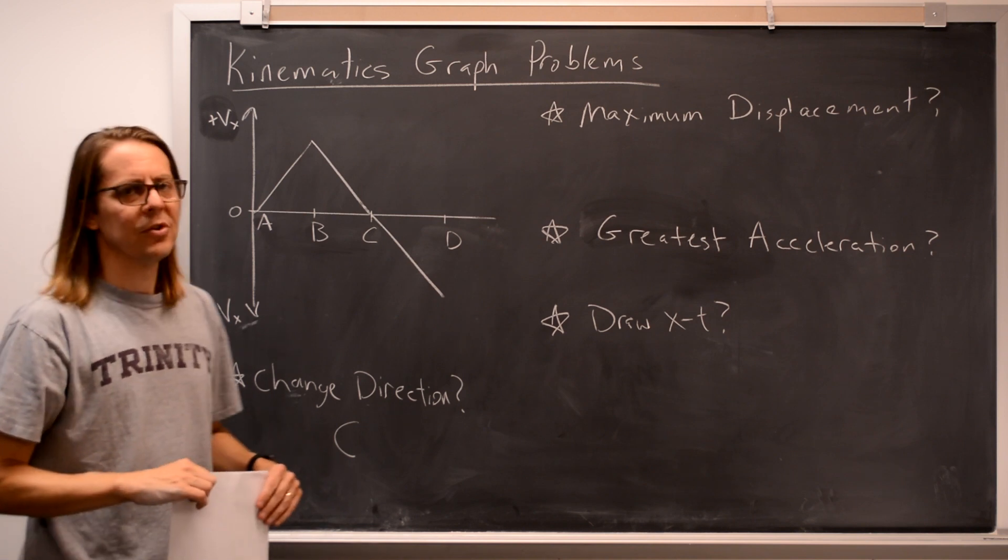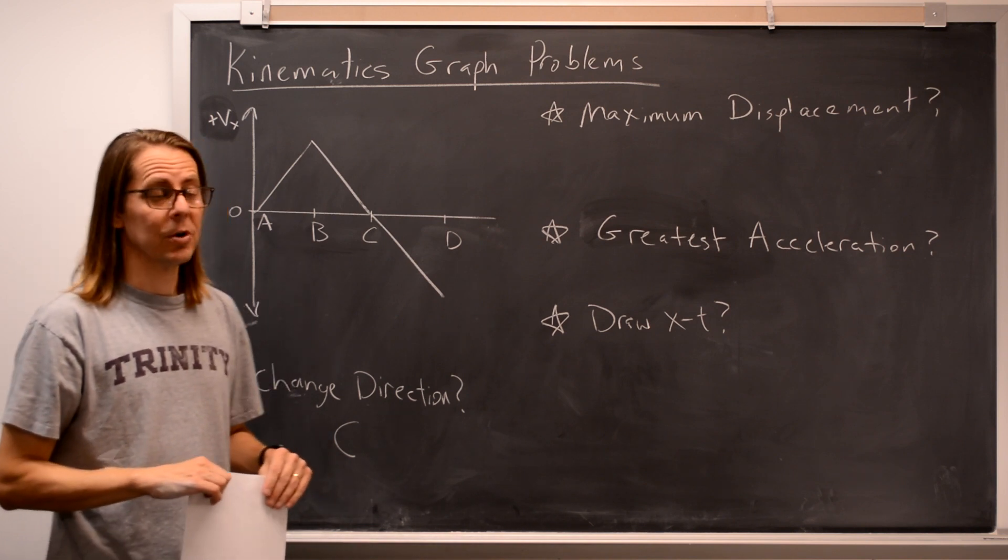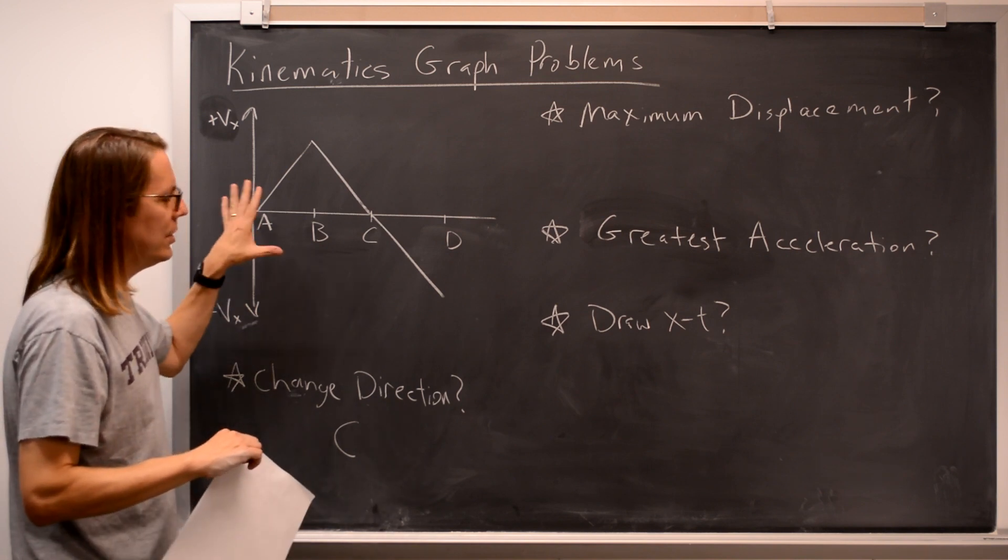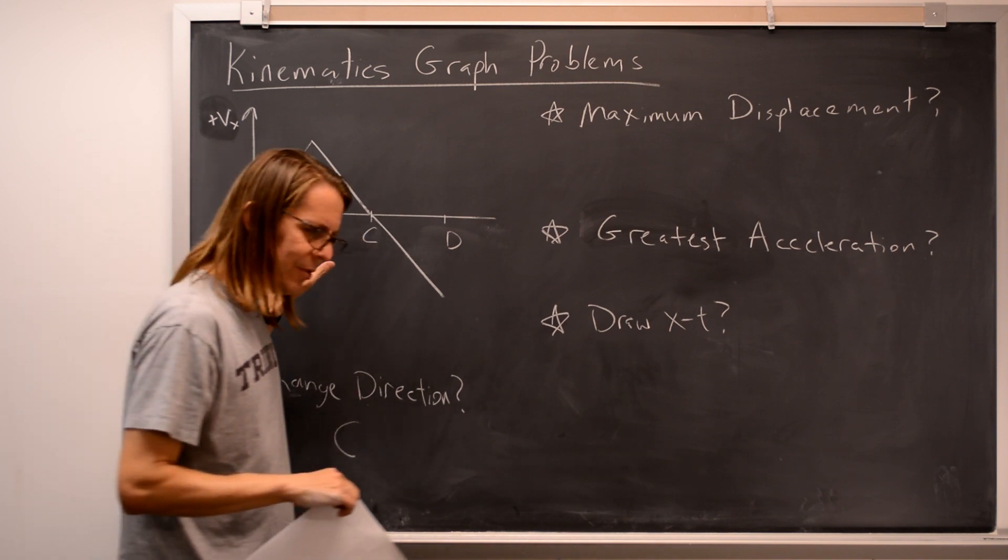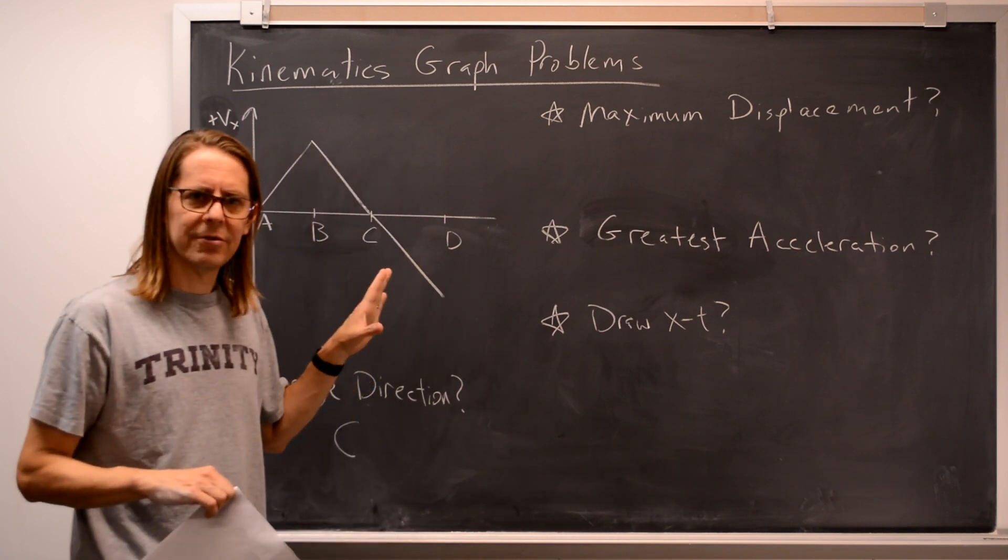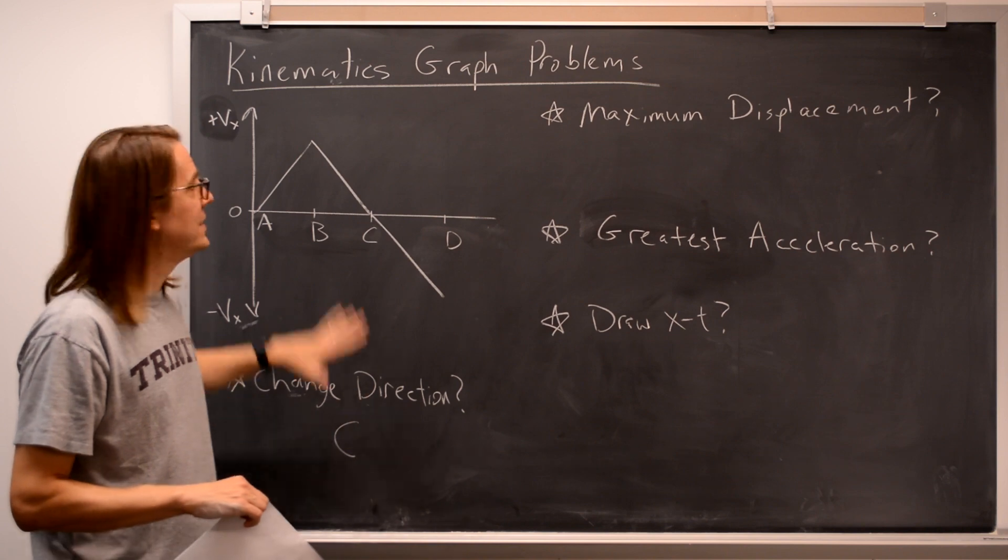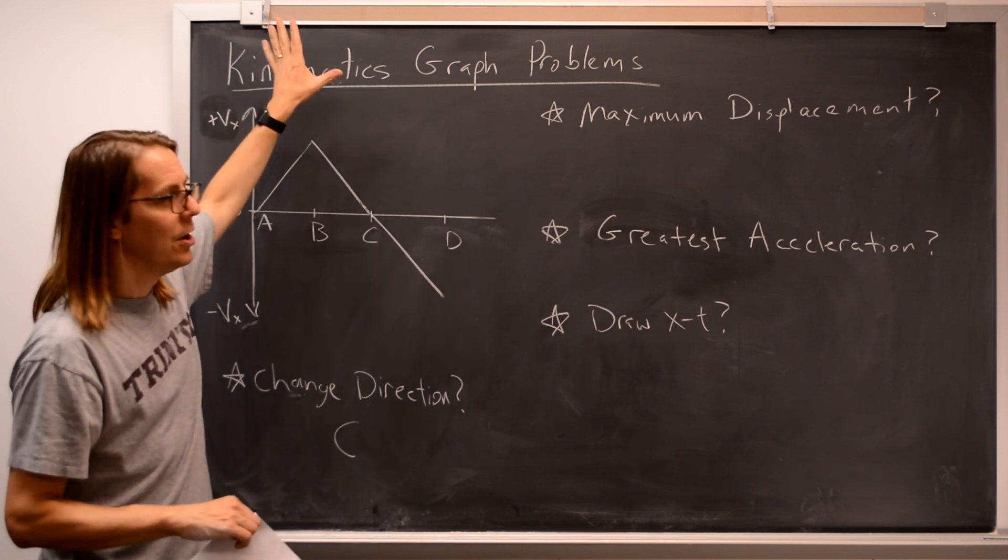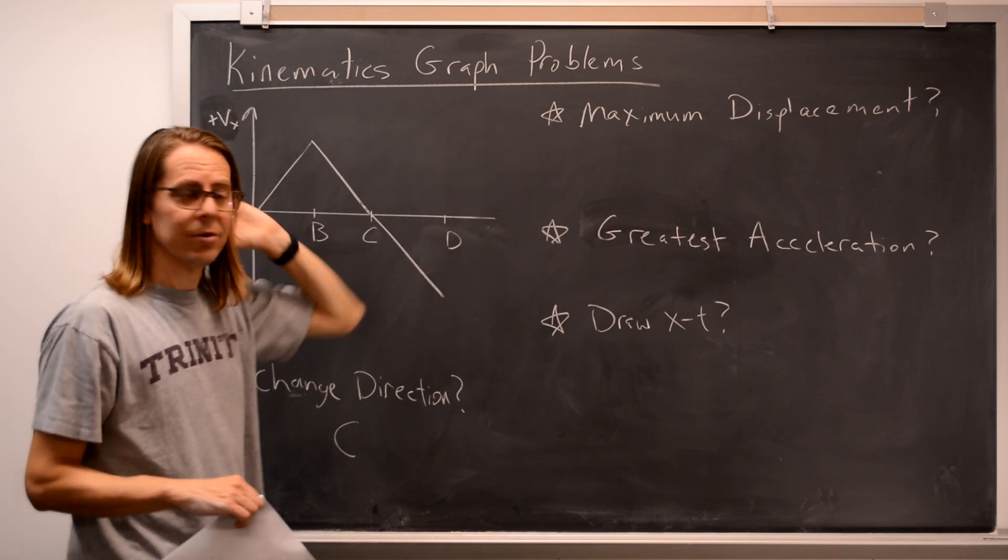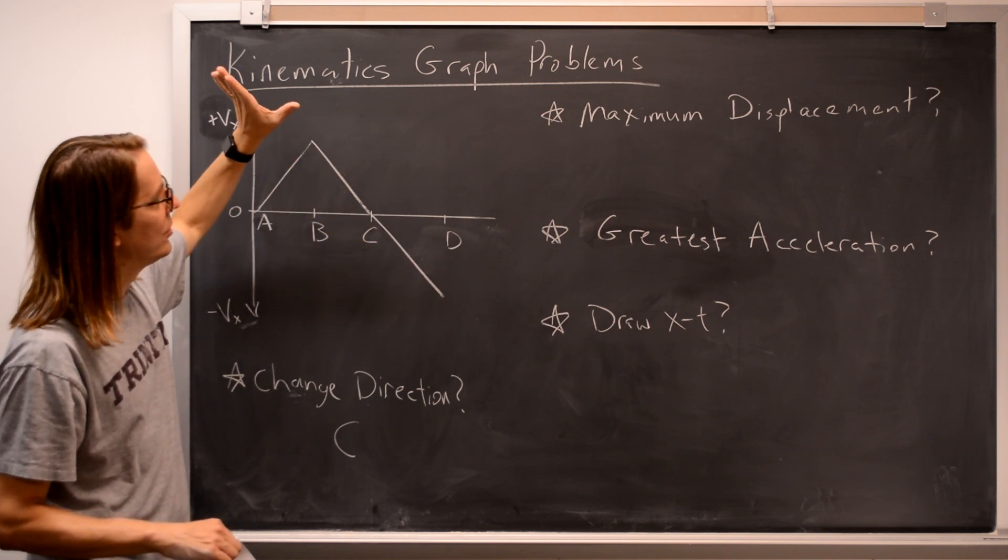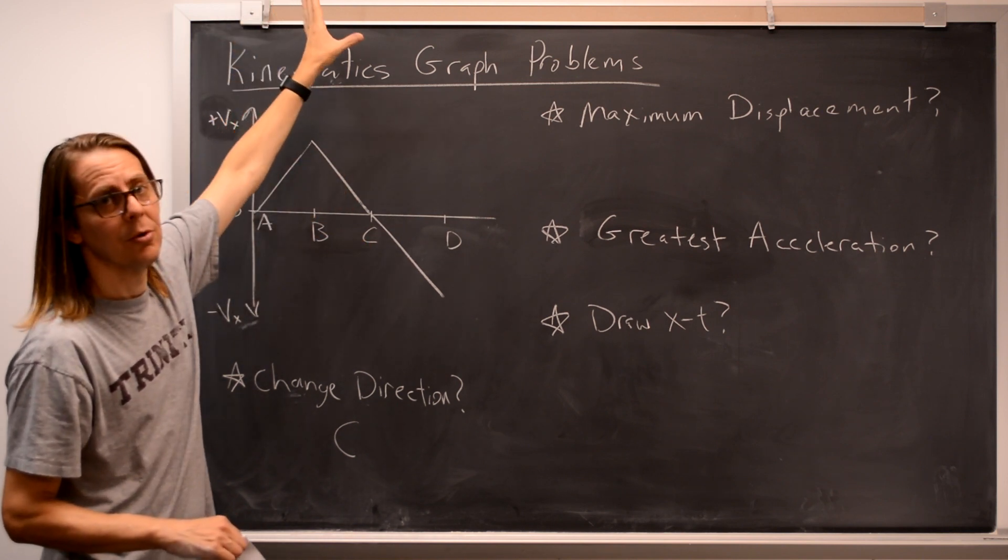Where is the maximum displacement from where it started? Okay, so that is a little trickier. We have to think about our calculus. If we have the velocity time graph, to get acceleration, you take the derivative, but to go up to position, remember it's the area under the curve. So the area under the curve is equivalent to the difference in position, or the displacement.